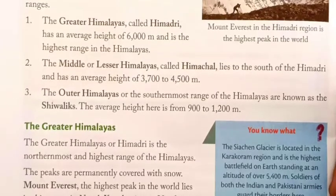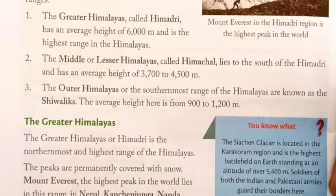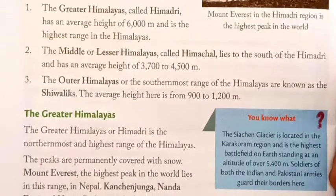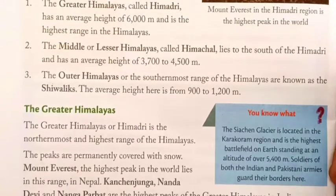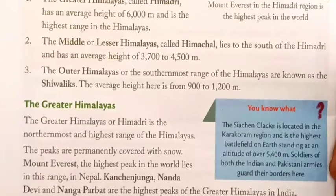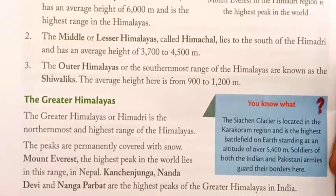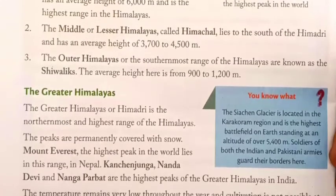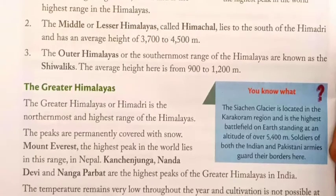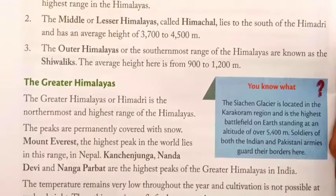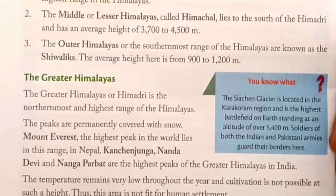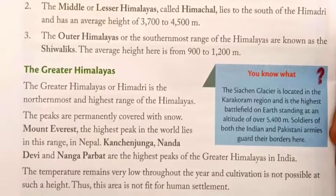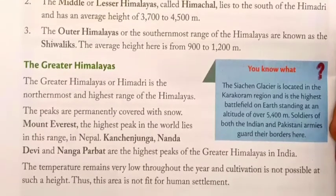The Greater Himalayas or Himadri is the northernmost and highest range of the Himalayas. The peaks are permanently covered with snow. Mount Everest, the highest peak in the world, lies in this range in Nepal. Kangchenjunga, Nandadevi and Nanga Parbat are the highest peaks of the Greater Himalayas in India. The temperature remains very low throughout the year and cultivation is not possible at such a height. Thus, this area is not fit for human settlement.